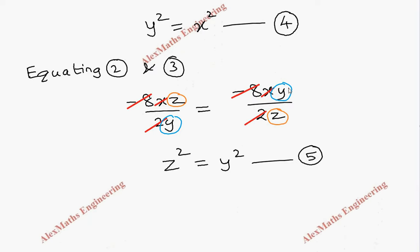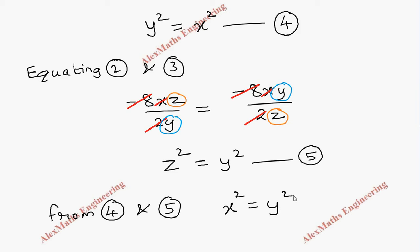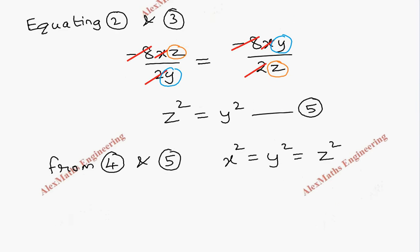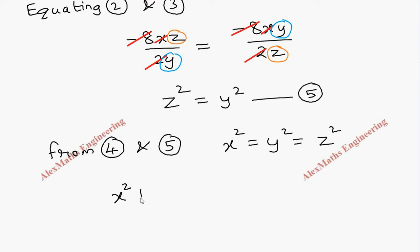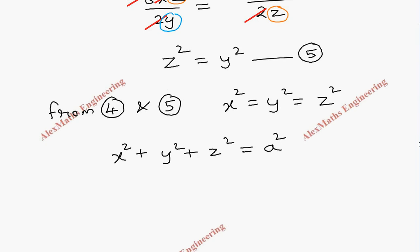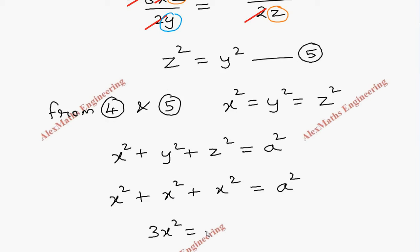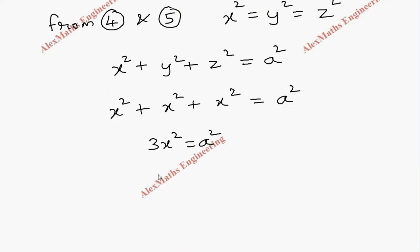From equations 4 and 5 we get the relation x² = y² = z². Substituting into the sphere equation x² + y² + z² = a²: since all three are equal we replace y² and z² with x², giving 3x² = a², so x² = a²/3, and therefore x = a/√3.